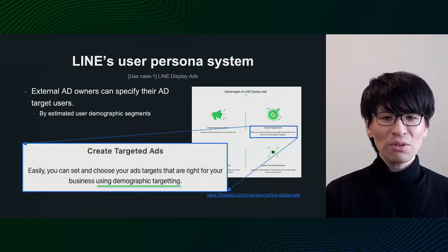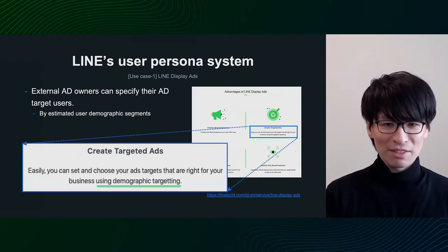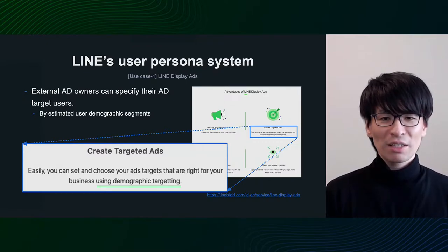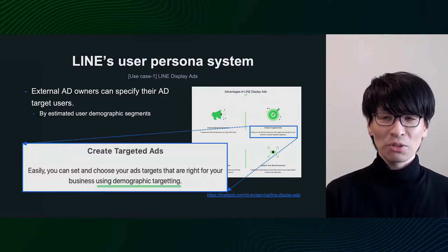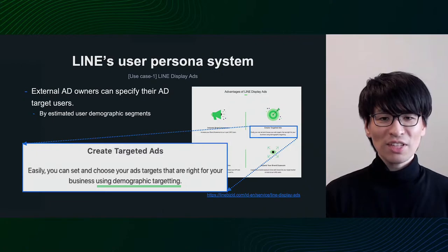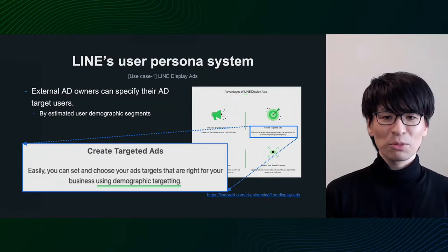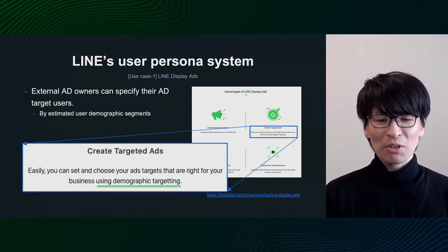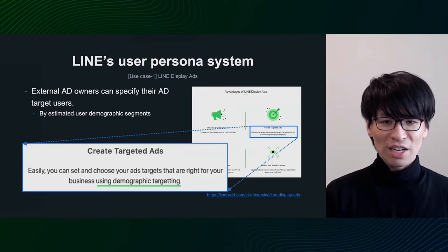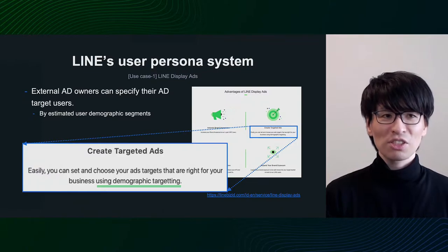Here are a few examples of how the estimated persona is used. First, let's take a look at LINE advertising. With LINE ads, external ad owners can set the target audience to which they want their ads delivered. You can specify the estimated attribute as the delivery target — for instance, early 40s in age group. This allows us to provide value to both advertisement owners and LINE users, which is beneficial to both.